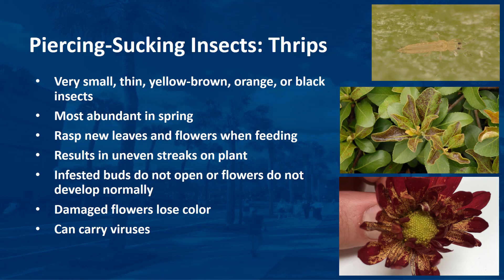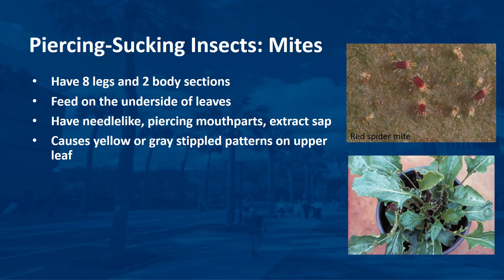Thrips are very small, thin, yellow-brown, orange, or black insects. They are only 1/25 to 1/8 of an inch long and are most abundant in the spring. These insects roughly rasp new leaves and flowers when they feed. Rasping results in uneven streaks on the plant instead of stippling. Some thrips leave fecal spots on the undersides of leaves. Infested buds do not open or flowers do not develop normally. Damaged flowers lose their color and buds usually drop. Like aphids and whiteflies, thrips also carry viruses that can damage plants.